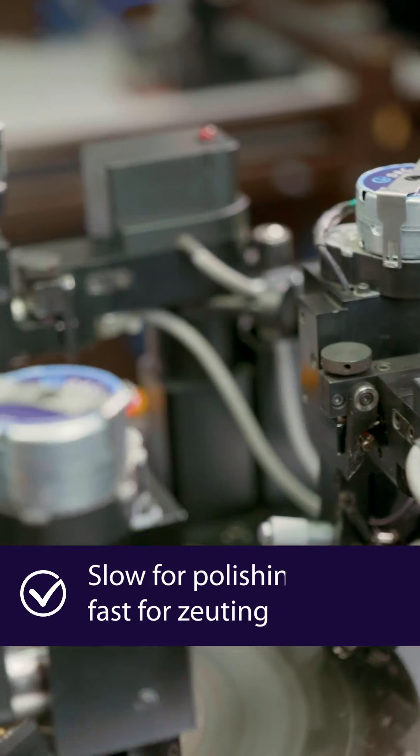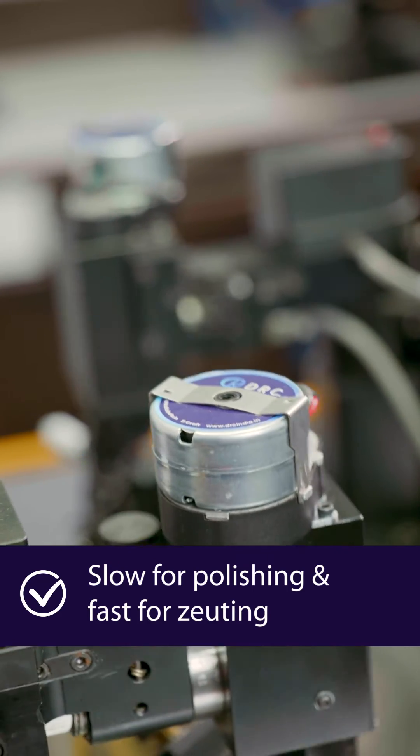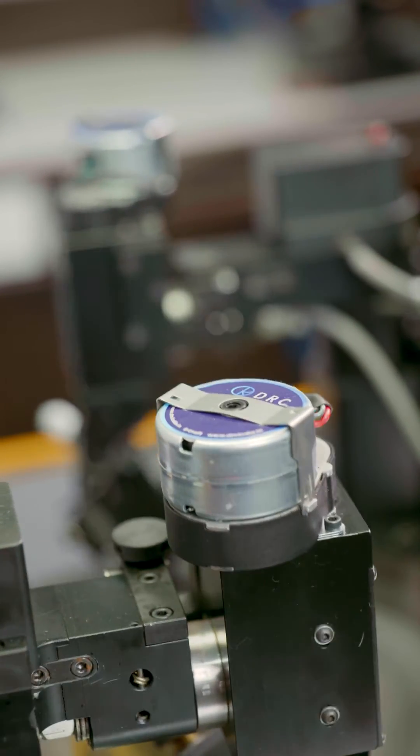The two-speed modes, slow for polishing and fast for zooting, provide you with optimal use of all your resources.